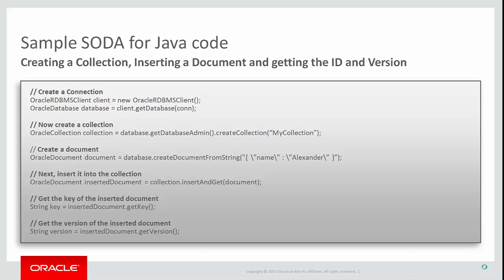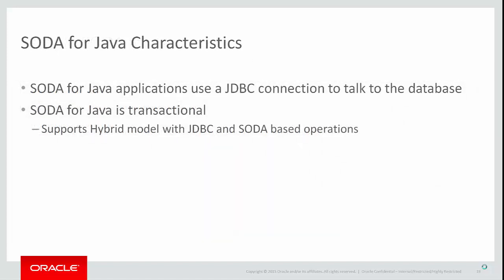As you can see from this simple example, SODA for Java is very easy to use. SODA for Java uses a JDBC connection and SQL Net to talk to the database. Developers can use the functionality provided by the JDBC connection to control their transaction semantics, allowing a series of SODA for Java operations to be executed as a single logical transaction. It also allows a mixture of SODA for Java operations and regular JDBC operations to take place on the same database connection, which is very useful to ensure data integrity when working in hybrid environments.